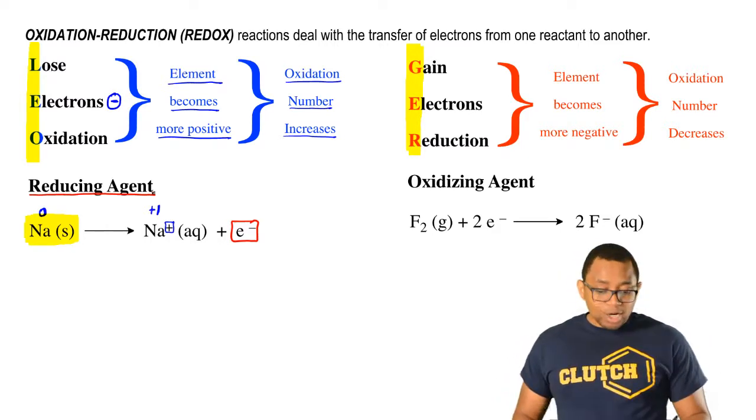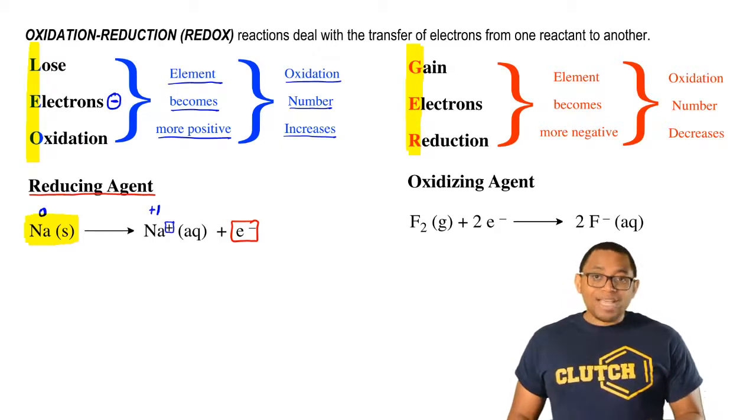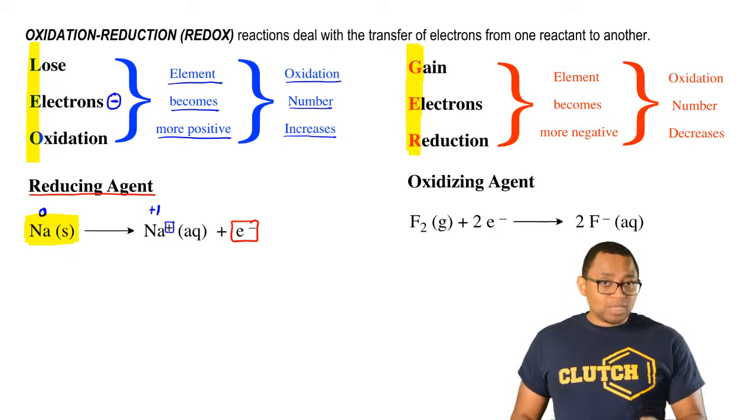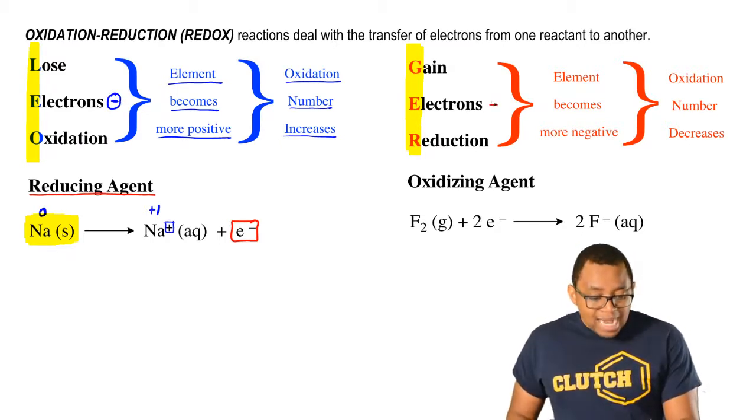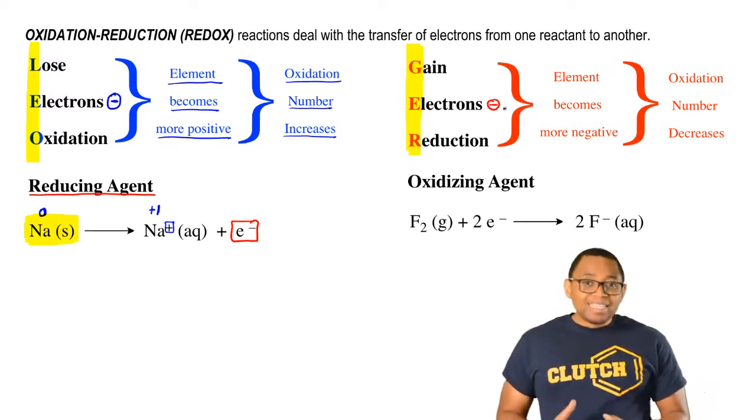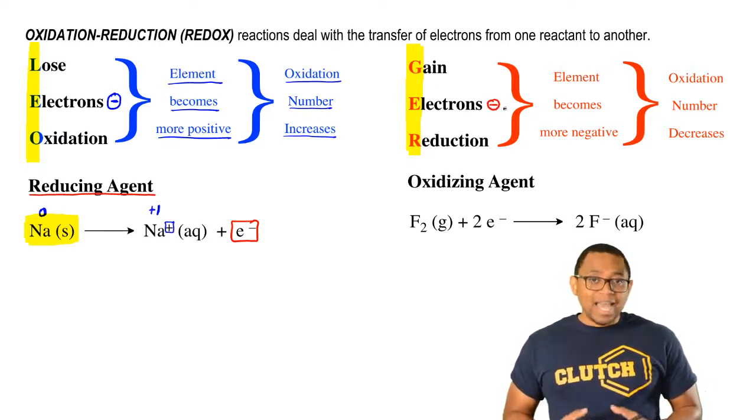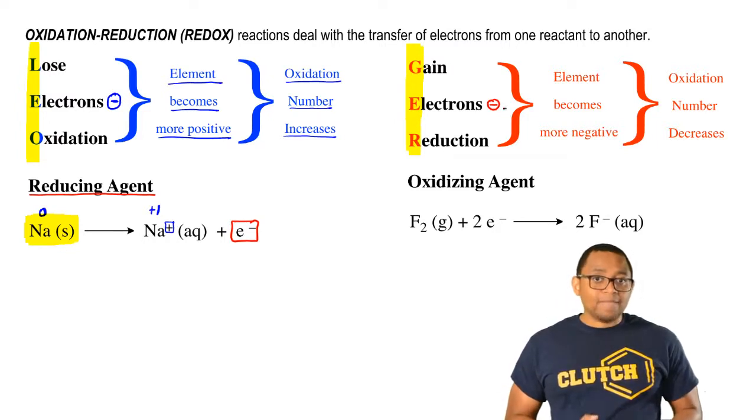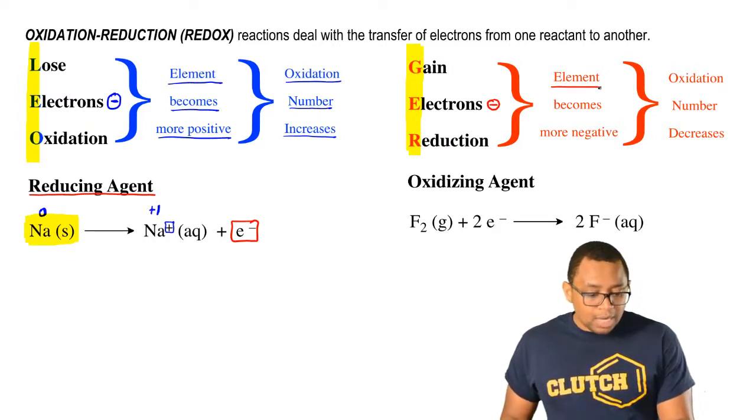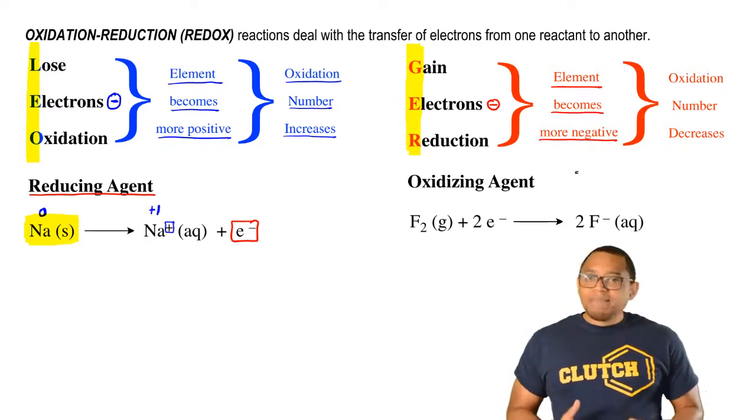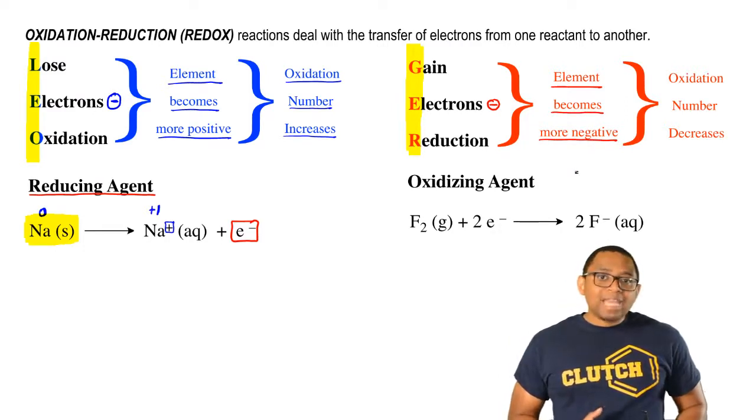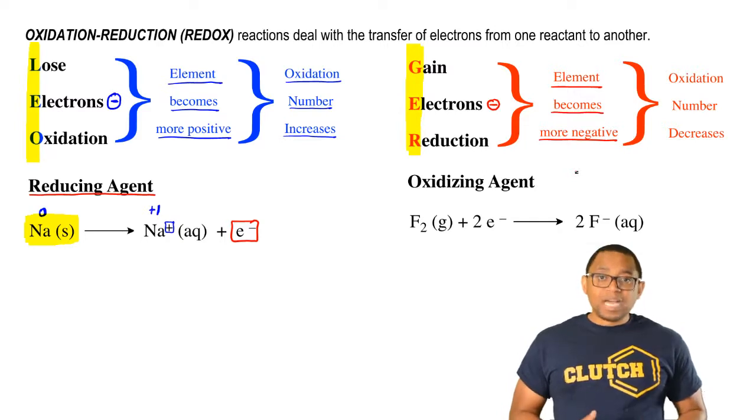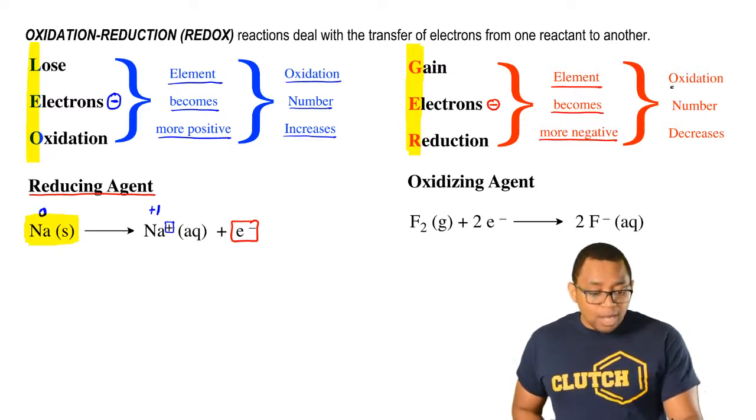GER is gain electrons reduction. Now you're gaining negative electrons. If you're gaining something negative, you as an element will become more negative over time. If you're becoming more negative, that means your oxidation number is becoming more negative. Your oxidation number is decreasing.